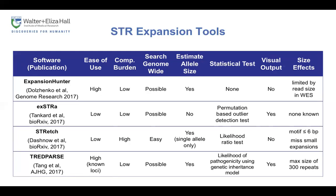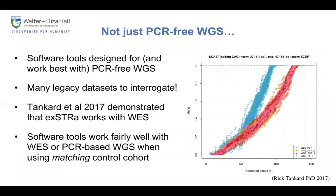In my opinion, Expansion Hunter is the easiest to use, and TredParse is fairly close as well. Adding new STR loci to TredParse is a little trickier. None of these methods are particularly difficult to use, and I would encourage you to use them all and search for consensus calls among them. One important point is that all methods were designed for PCR-free WGS and work best with that sort of data.